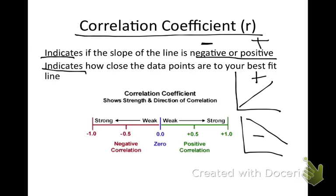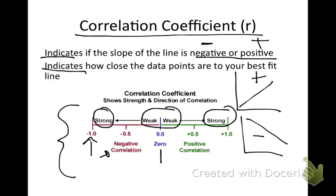This correlation coefficient also indicates how close the data points are to your best fit line. If our number is close to negative one, it's a very strong negative correlation. If our number is zero, there's a very weak correlation, meaning that our line doesn't really fit with the data points. If our number is positive one, that means we have a very strong positive correlation. We're going to practice using these in the next couple slides.